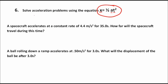Let's look at a couple of questions that illustrate the use of this equation. The first question says: a spacecraft accelerates at a constant rate of 4.4 meters per second squared for 35.0 seconds. How far will the spacecraft travel during this time? We're looking for how far — that's displacement — so we write x equals question mark.